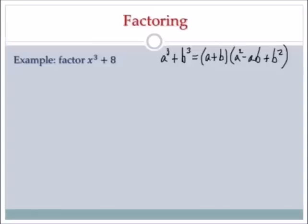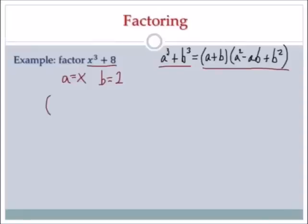Hi, it's me, Mr. B. Let's factor x cubed plus 8 using sum of two cubes. I've given you the formula on the screen. We're given a cubed plus b cubed in the form of x cubed plus 8. Let's figure out what a is: a is what I cube to get x cubed, which is x. b is what I cube to get 8, which is 2. Now I know a and b, so let's plug it into the formula.